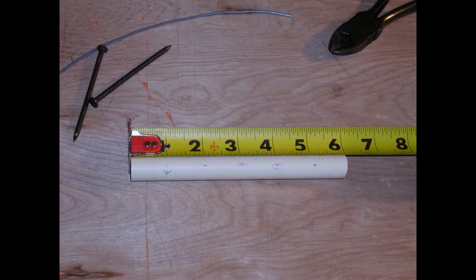At the three and four inch marks we're going to drill all the way through the PVC. At the one inch mark we're also going to drill all the way through the PVC but it's going to be at a 90 degree angle to the other holes in the PVC.